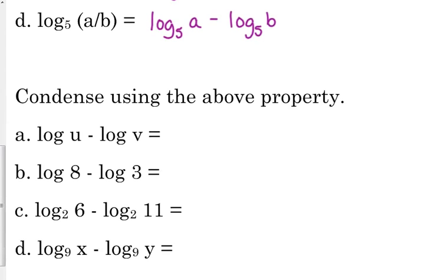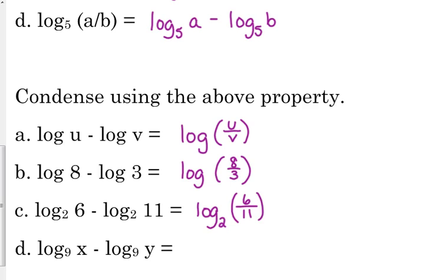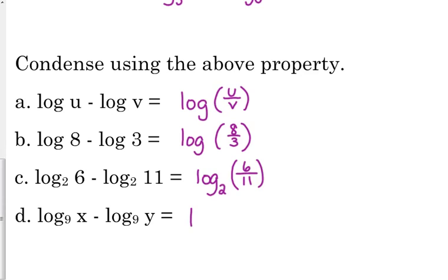So vice versa, if we're going to condense, if we're going to put them together, log of u minus the log of v would be the log of u over v. Log of 8 minus the log of 3 would be the log of 8 over 3, and if you can simplify those numbers you're more than welcome to do so. Log base 2 of 6 minus log base 2 of 11 is log base 2 of 6 over 11, and log base 9 of x minus log base 9 of y would be the log base 9 of x over y.